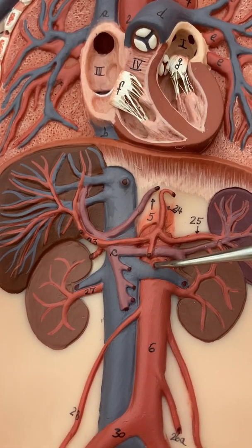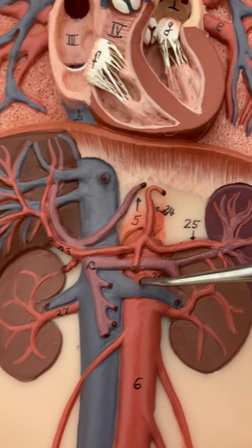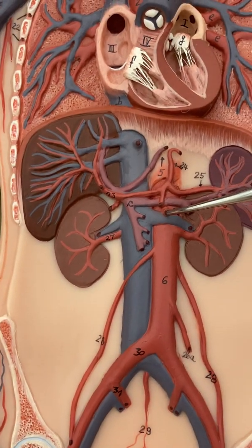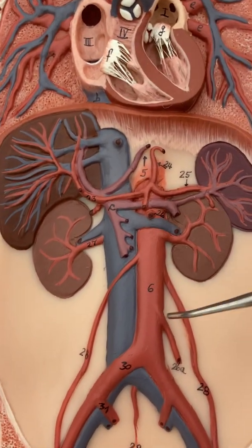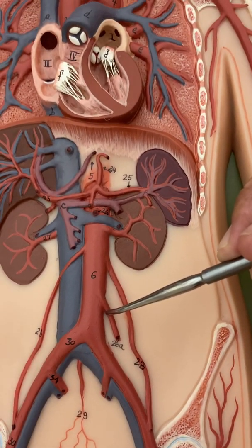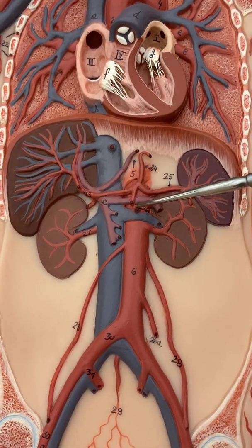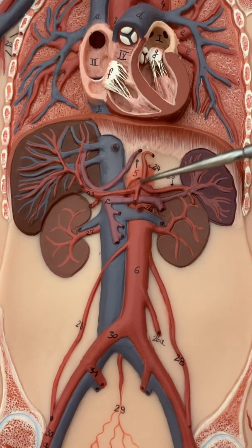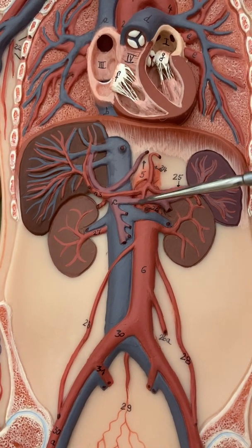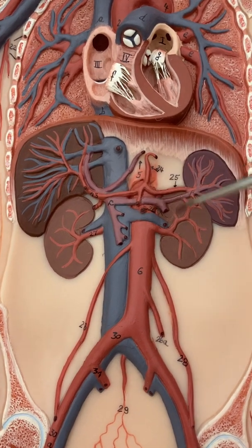The superior mesenteric trunk — 'mesenteric' means the intestines — goes to the superior part of the large and small intestines. The inferior mesenteric goes to the inferior part of the intestines. So that's CSI, with C having three branches, and this area also supplies the pancreas.